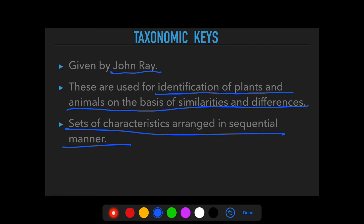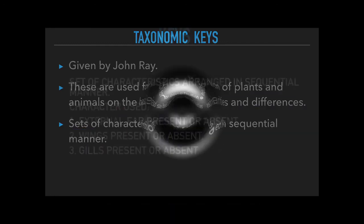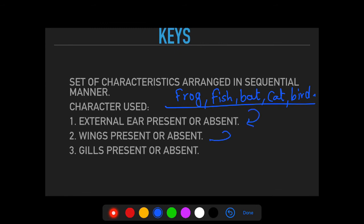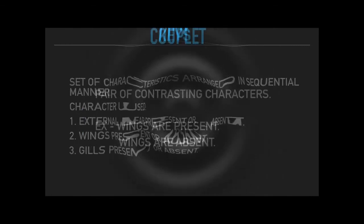For example, to classify frog, fish, bat, cat, and bird, we take three characters: external ear, wings, and gills. We check for each organism whether each character is present or absent, and arrange all organisms accordingly. This entire set of characters is called taxonomic keys. Within these, a pair of contrasting characters — for example, wings present or wings absent — is called a couplet.